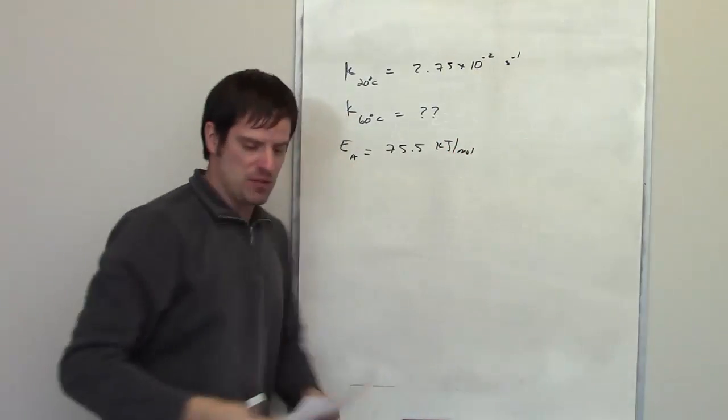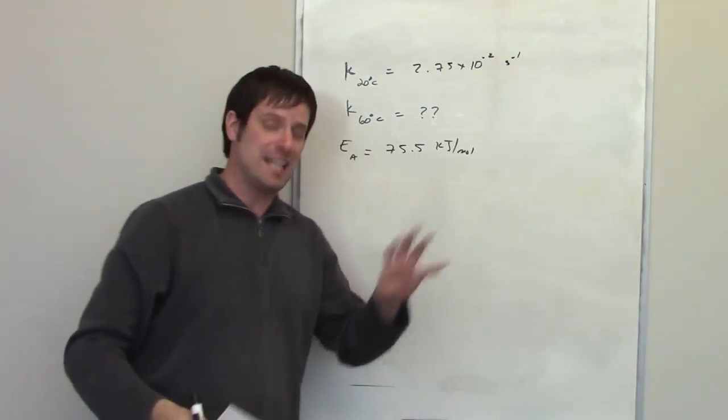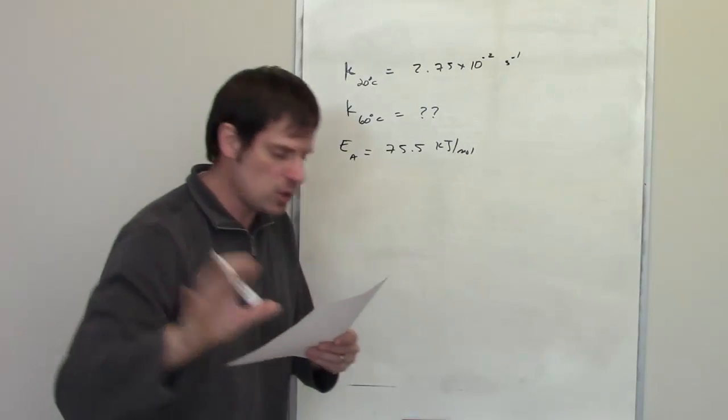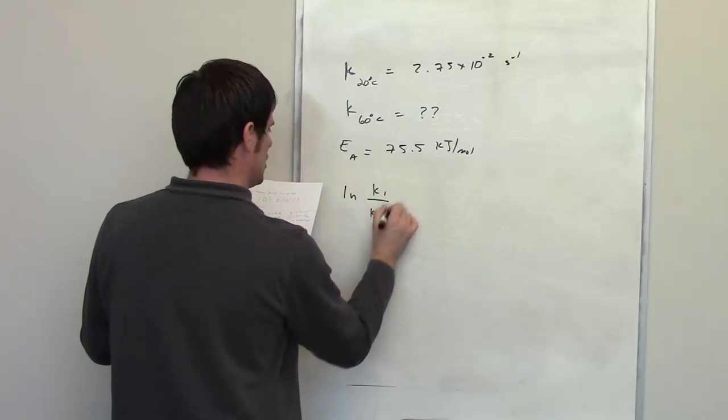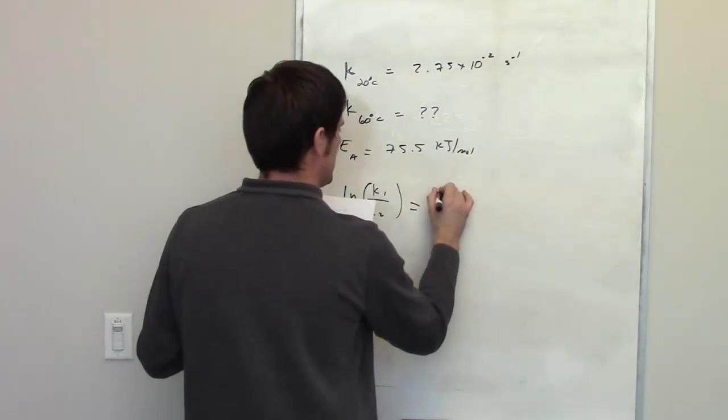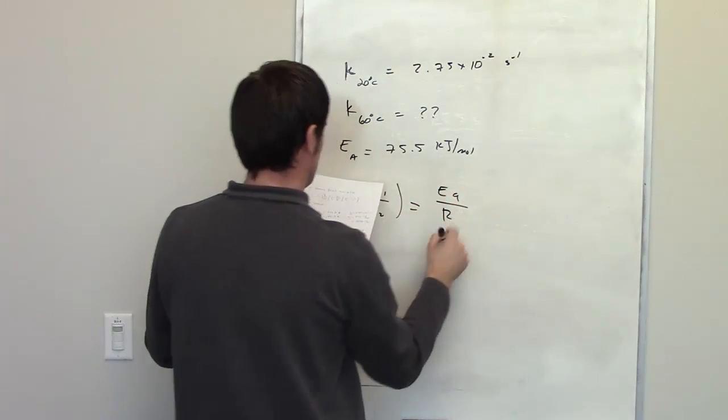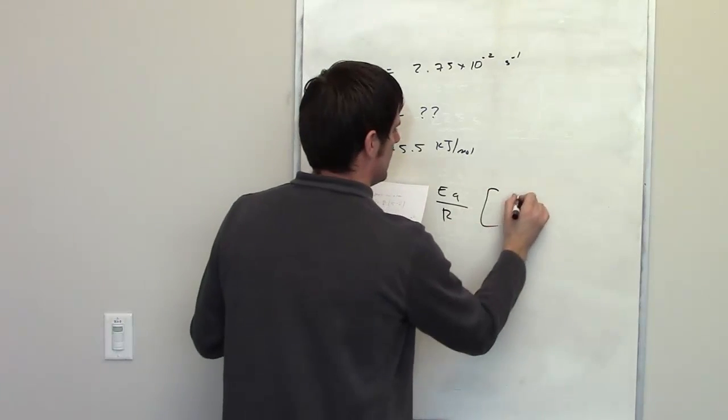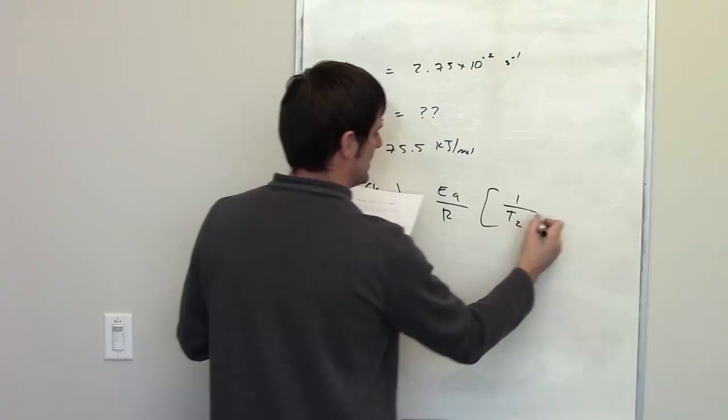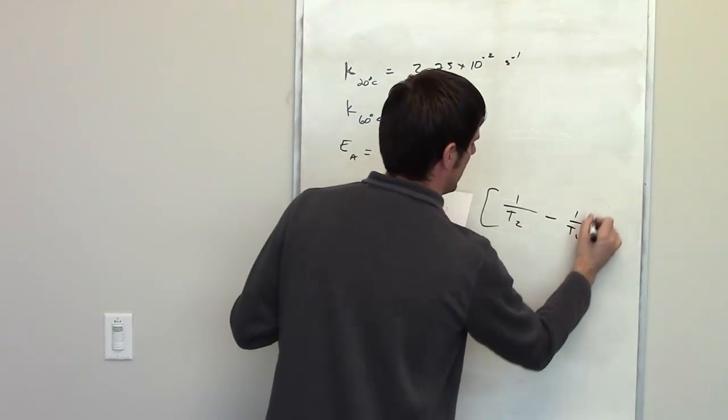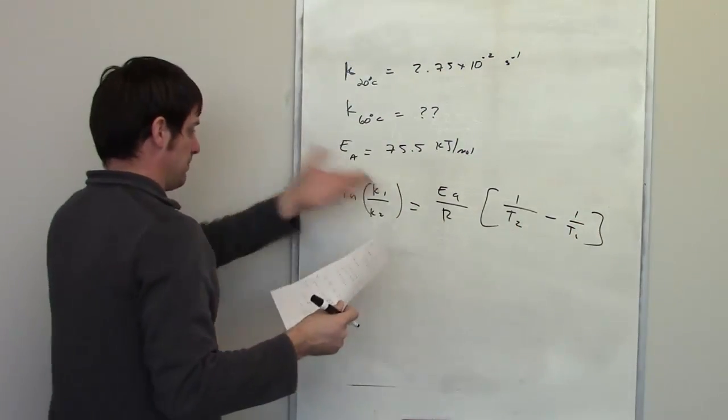I have to remember from an earlier equation that I will link to right here that for a first-order reaction, the natural log of k1 divided by k2 is equal to the activation energy divided by the ideal gas constant multiplied by this big crazy thing, 1 over T2 minus 1 over T1. And that's the equation.